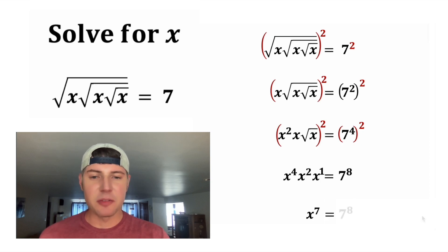And on the right hand side, we can just bring down the 7 to the 8. The way to deal with this x to the 7th is to take the 7th root of both sides. On the left hand side, the 7th root and the 7 will cancel out to just give us x.